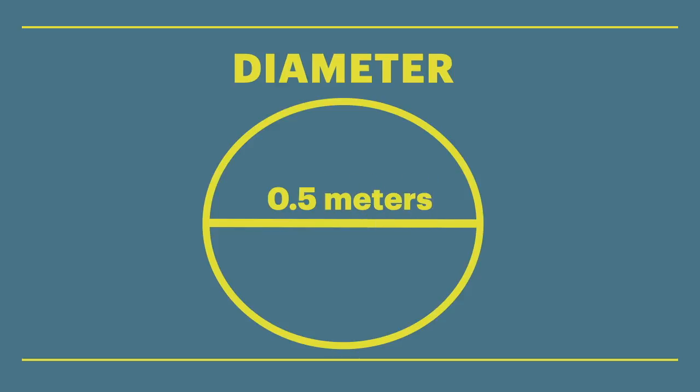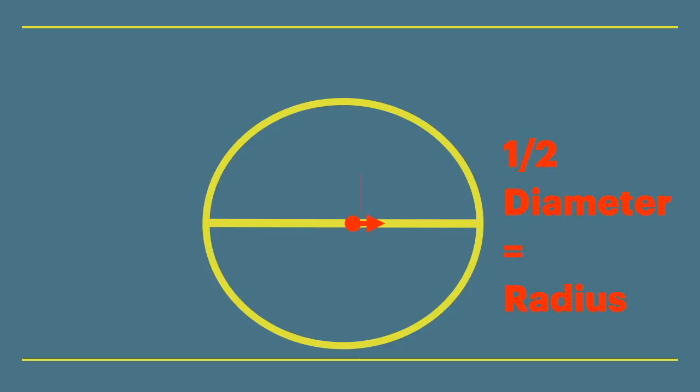Remember, a diameter is the length from one side of a circle to the other side passing through its center. Another important note about diameters is half of a diameter is called a radius. So a radius is the length from the center to the edge of a circle.